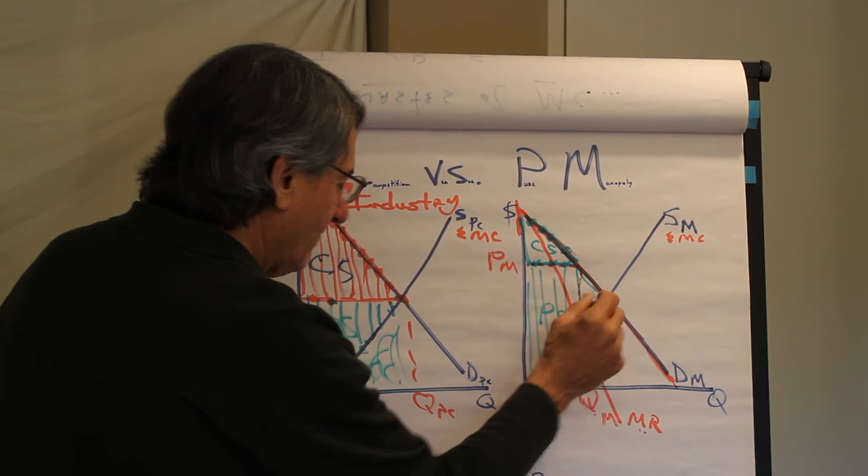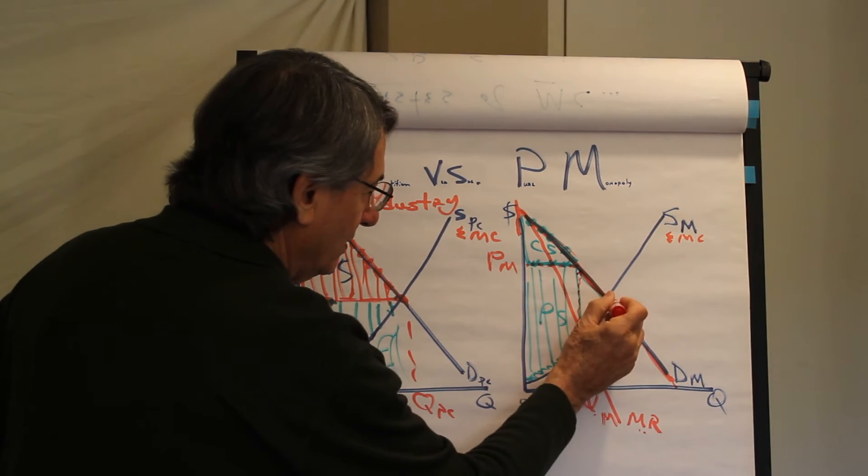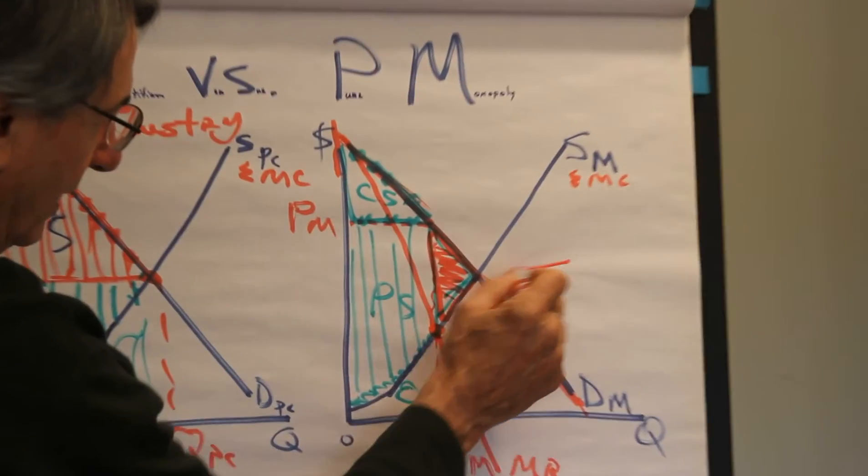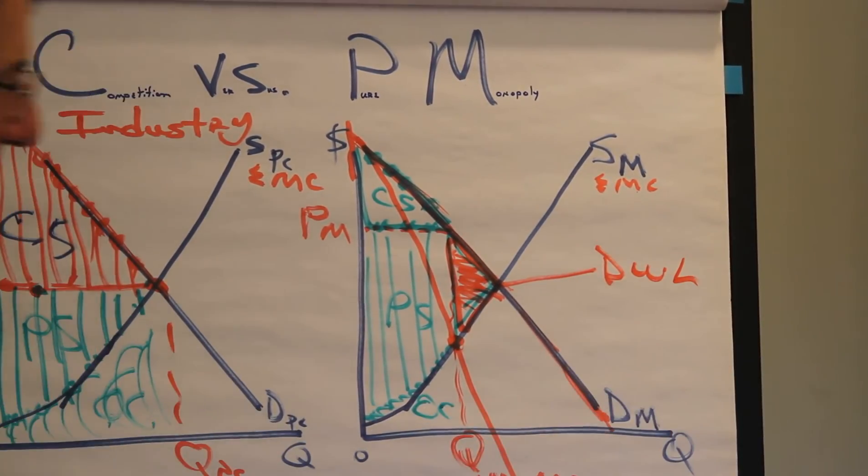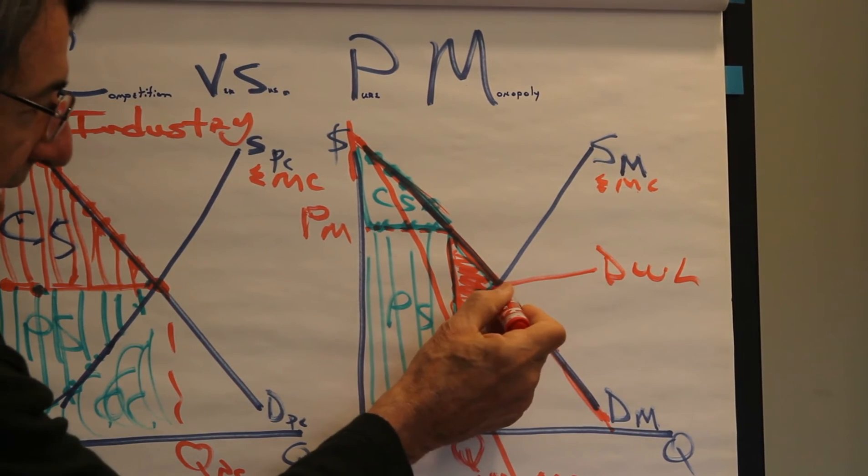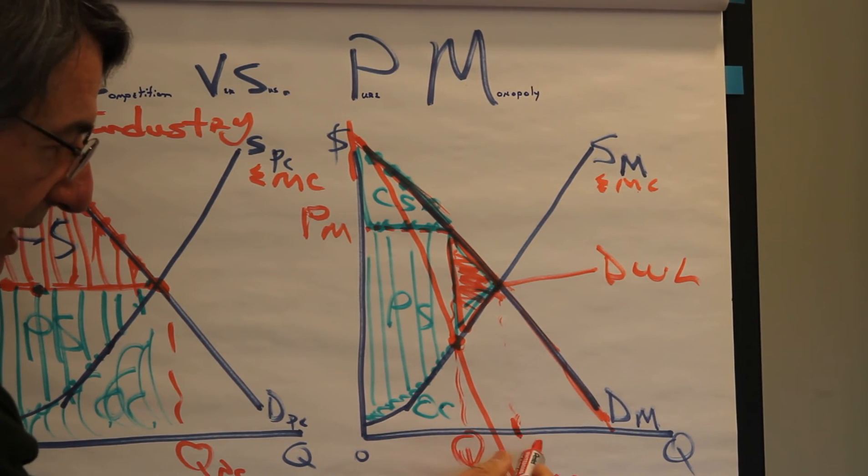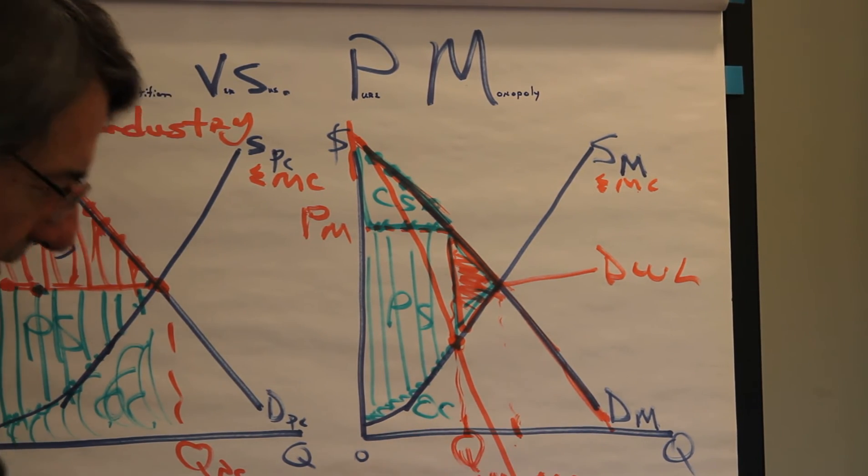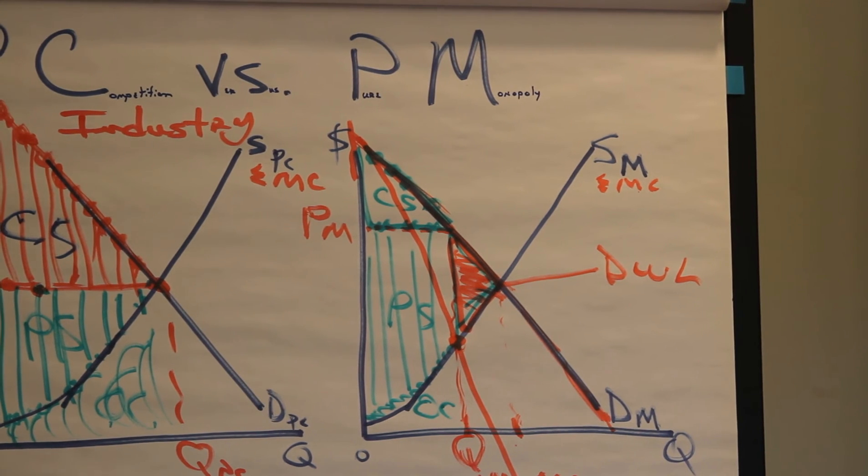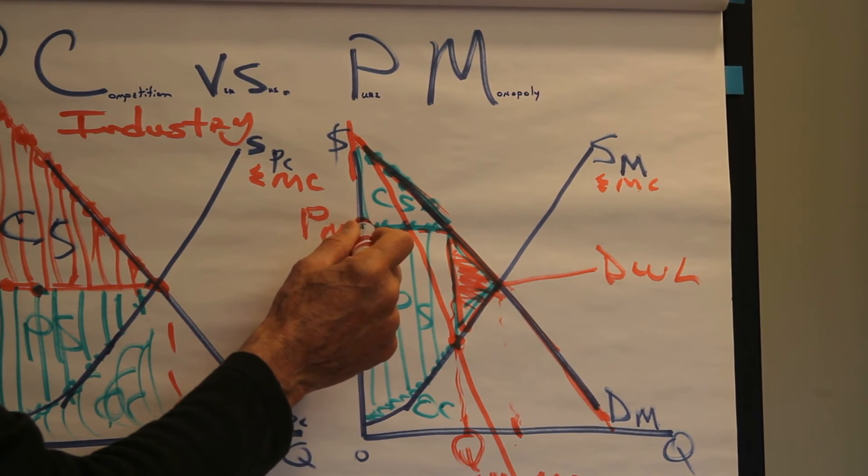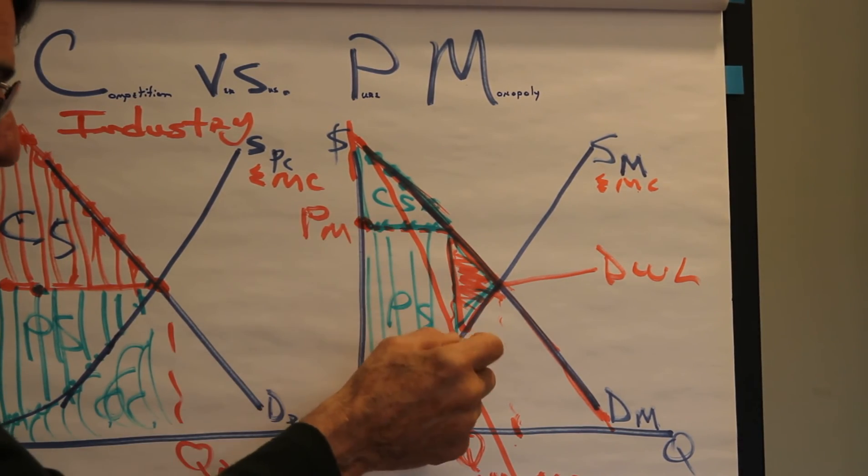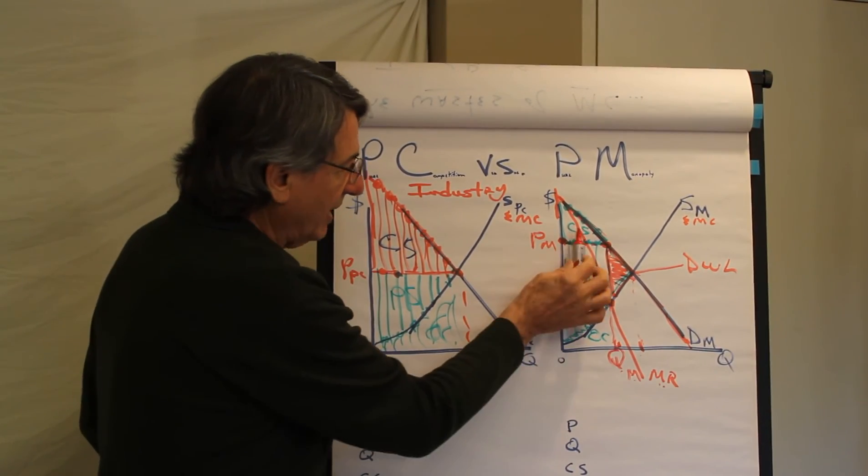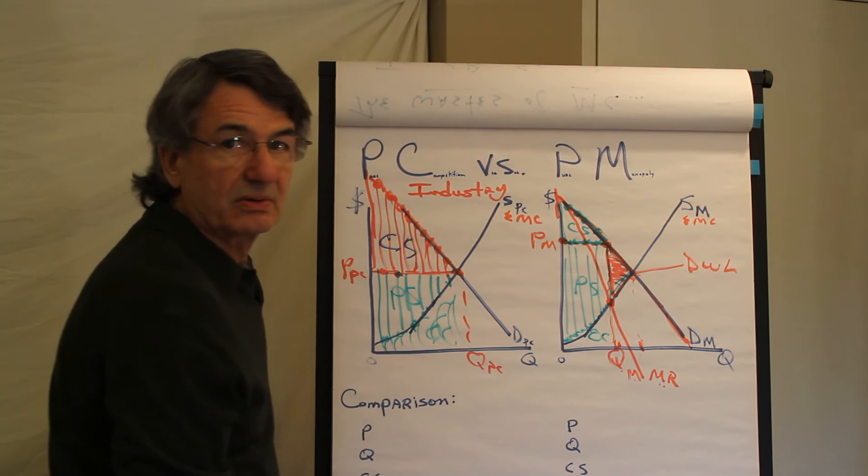But do you see this area right here? This little triangle? This triangle here is a deadweight loss. It's lost wealth because of some market restriction. And I, JP McNeil, have cut back the quantity that would have been in a purely competitive environment. I have cut it back to this quantity, the monopoly quantity, for the purposes of being able to raise the price. By cutting back on quantity, I'm able to raise the price to the industry profit maximizing quantity and price combination. And as a result, I have decreased consumer surplus and increased producer surplus.